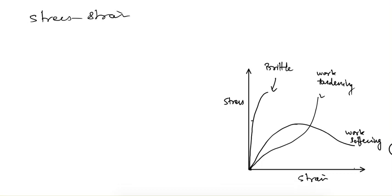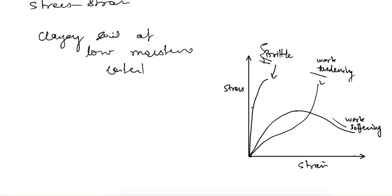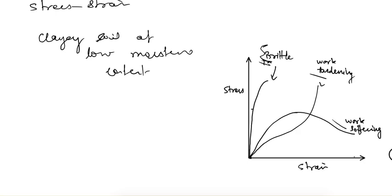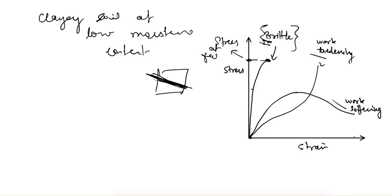The soil can behave in different conditions: brittle, work hardening, or work softening. If it is a clay soil at low moisture content, it behaves as a brittle material. As we increase the stress up to a point, the sample will suddenly break. There is a definite point at which we can define the stress at failure for brittle soils.